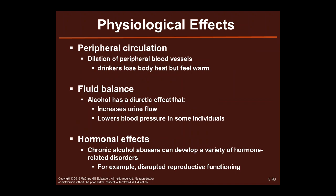Peripheral circulation: dilation of the peripheral blood vessels happens when you drink, so you think you're getting warm — but you're actually losing body heat. Don't go walking outside in the snow because you think you're warm. Fluid balance: alcohol has a diuretic effect, increasing urine flow and lowering blood pressure in some individuals. Hormonal effects: chronic alcohol abusers develop a variety of hormone-related disorders, including disruptive reproductive functioning.